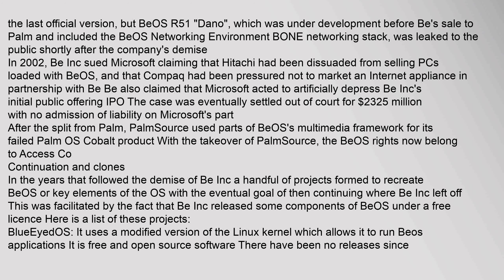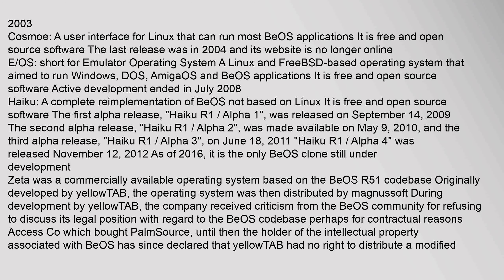In the years that followed the demise of Be Inc., a handful of projects formed to recreate BeOS or key elements of the OS, with the eventual goal of continuing where Be Inc. left off. This was facilitated by the fact that Be Inc. released some components of BeOS under a free license. Among these projects: Blueos uses a modified version of the Linux kernel which allows it to run BeOS applications; it is free and open source software with no releases since 2003. Cosmo is a user interface for Linux that can run most BeOS applications; it is free and open source, with its last release in 2004.